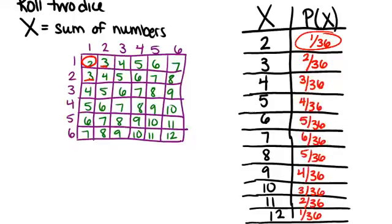So this is an example of a probability distribution. It shows all the possible values for the variable from 2 up to 12 and the probabilities associated with each of those variables.